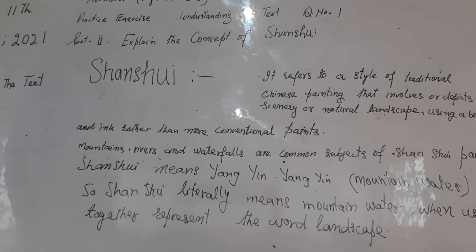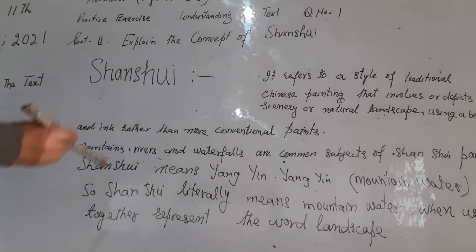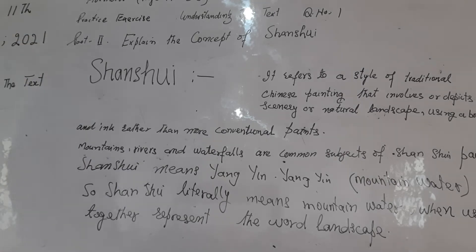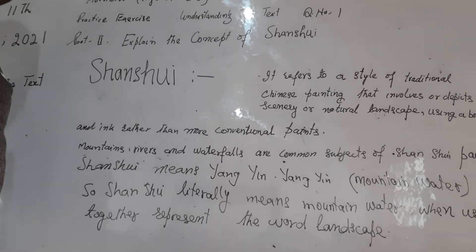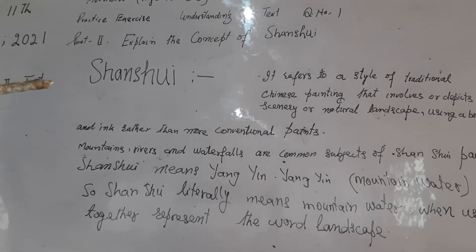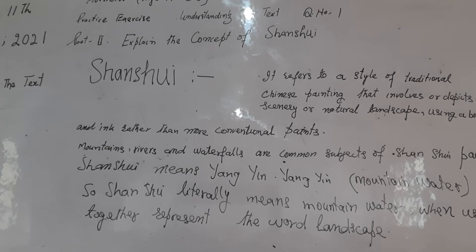Landscape of the Soul — the first part of the exercise. Question number one, part two, because we have done part one yesterday. The question is: explain the concept of Shanshu. Shanshu is a Chinese word, and we have read in the text what Shanshu is.